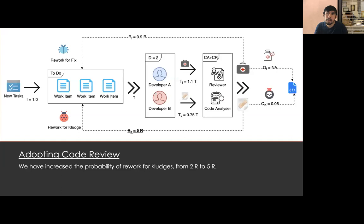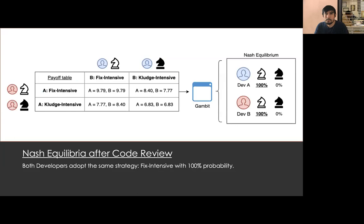Given the promising results from increasing the cost of kludges, let's go further. If besides automatic code analysis we include a code review made by an actual engineer, let's assume that the probability of rework for kludges increases from 2R to 5R. The equilibrium obtained is now aligned with what the organization wants — developers adopt the fix-intensive strategy with 100% probability. While in the original process we obtained 18.12 features per release, in the new process at equilibrium we are delivering 19.58 features, an increase of 8%, while keeping a healthy code base.